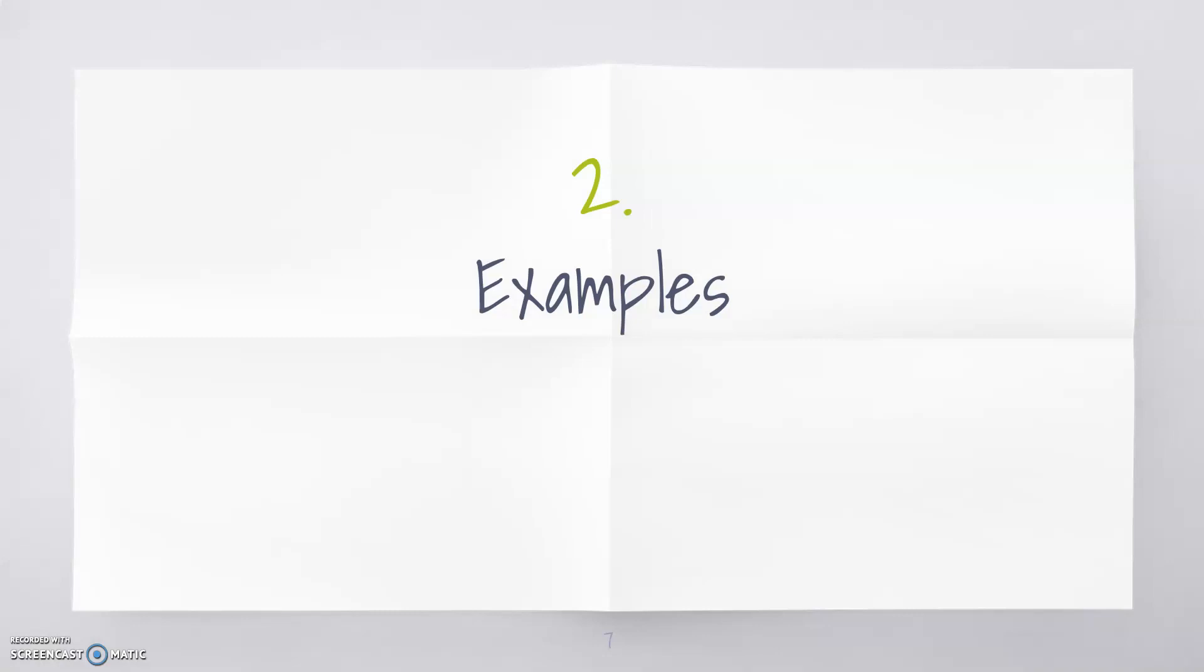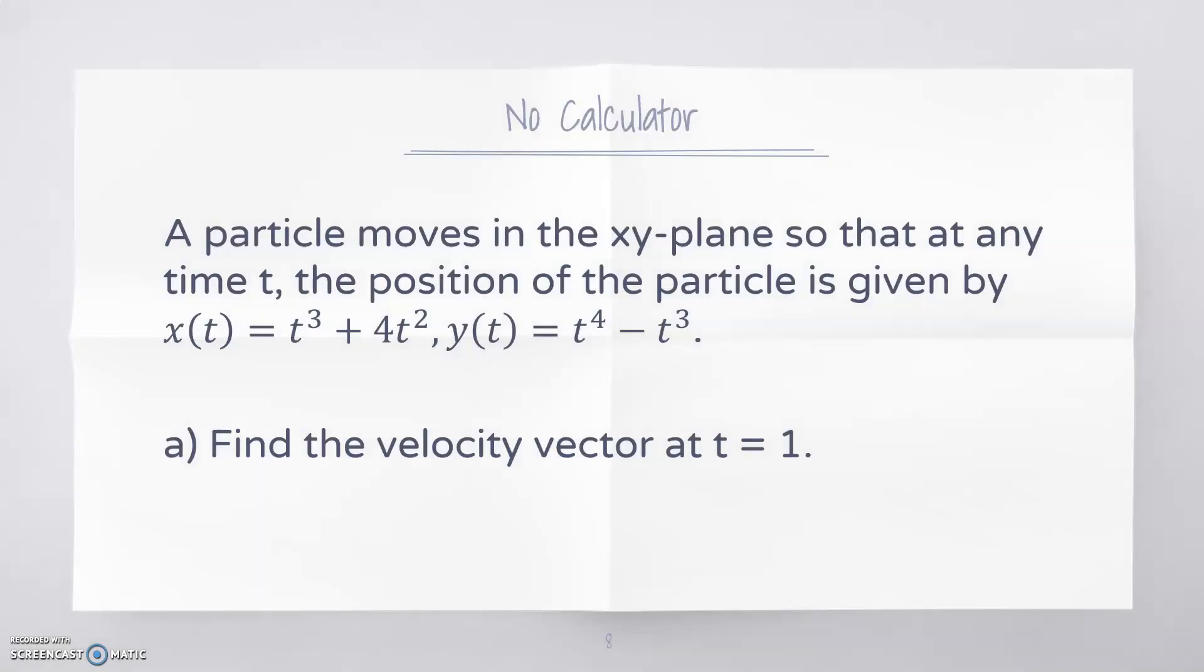We're going to do some examples of motion in the plane, actually just this one example. A particle moves in the xy-plane so that at any given time t, the position of the particle is given by x(t) = t³ + 4t² and y(t) = t⁴ - t³, and our job is to find the velocity vector at t = 1.